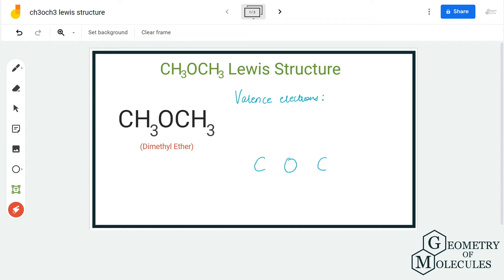Hi guys, welcome back to our channel. In today's video we are going to determine the Lewis structure for CH3OCH3, which is also known as dimethyl ether. It has a very simple Lewis structure and you can actually determine it by just looking at this chemical formula.